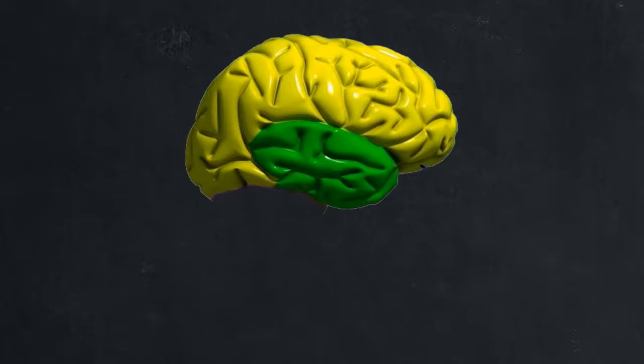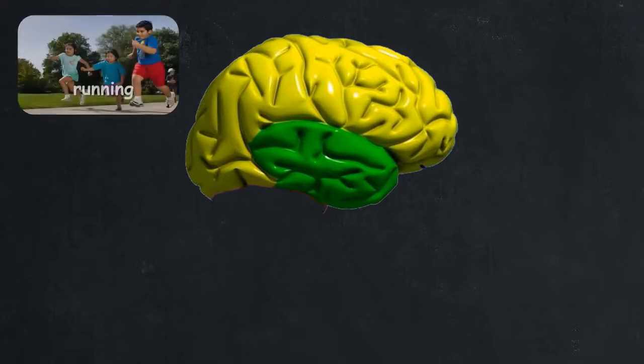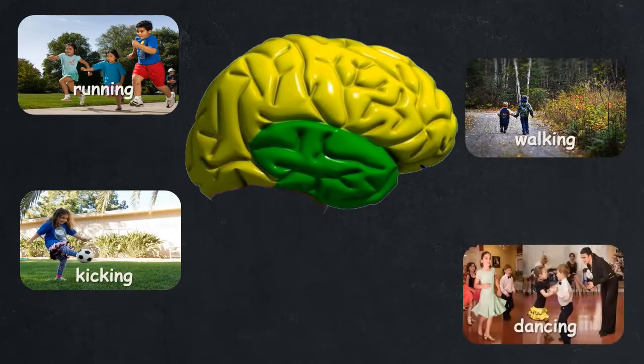The cerebrum is the largest part of the brain. It controls the voluntary movements of your muscles like running, walking, kicking, and dancing.